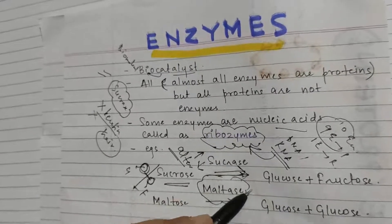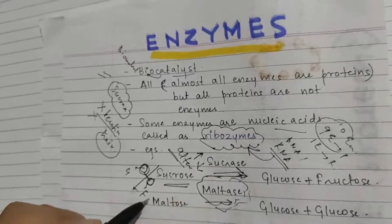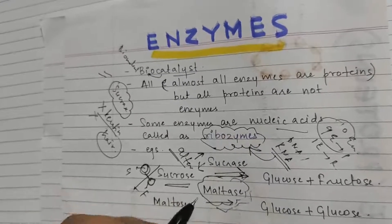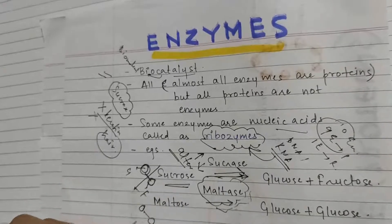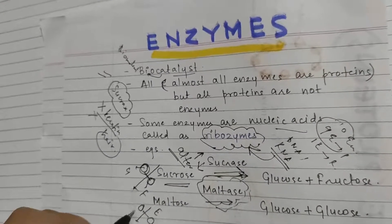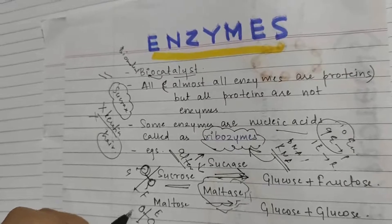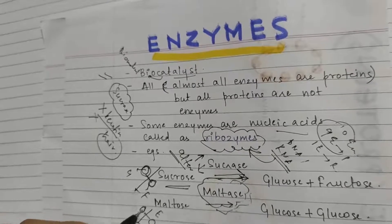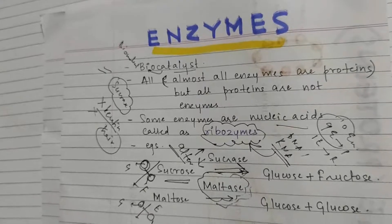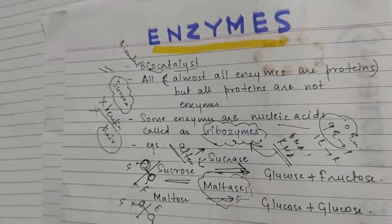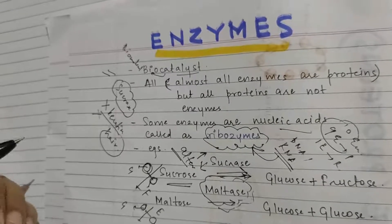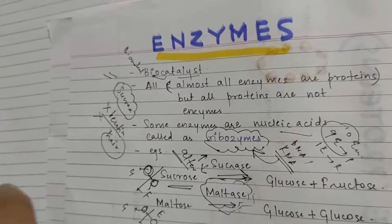Another example is maltase. Maltase is used for breaking down maltose into glucose plus glucose. Again, maltose is a disaccharide, and we use the enzyme maltase to speed up its breakdown, giving us two glucose molecules. That was a brief introduction about enzymes; the next video will cover more.